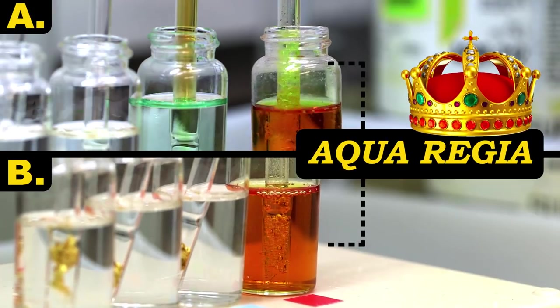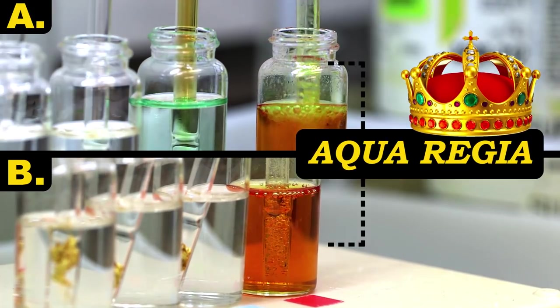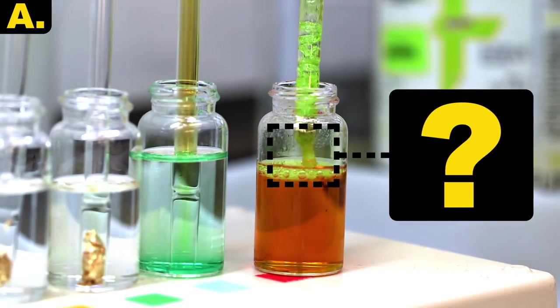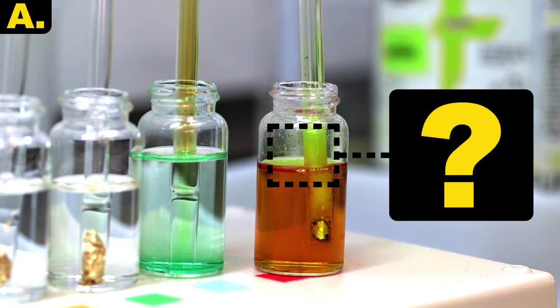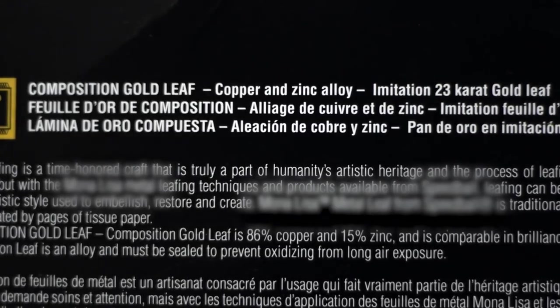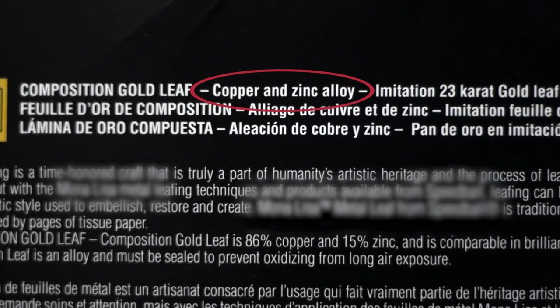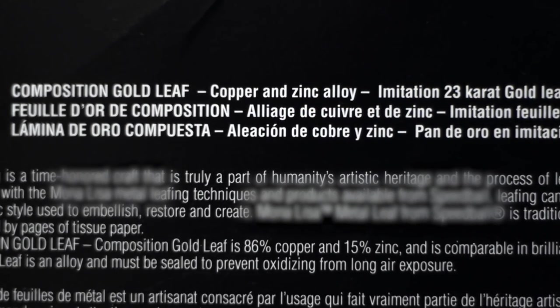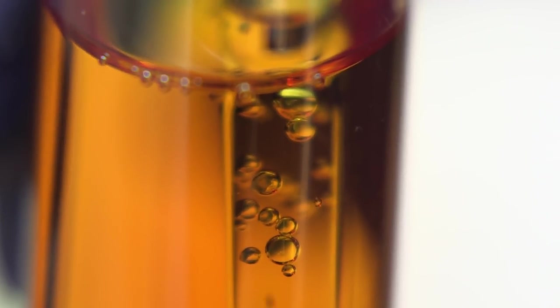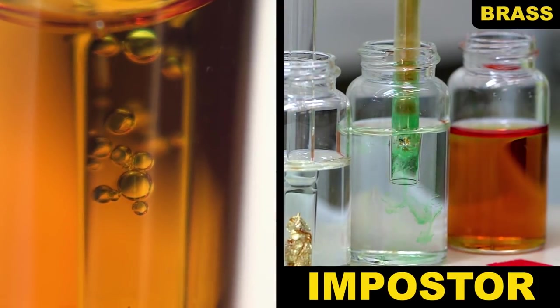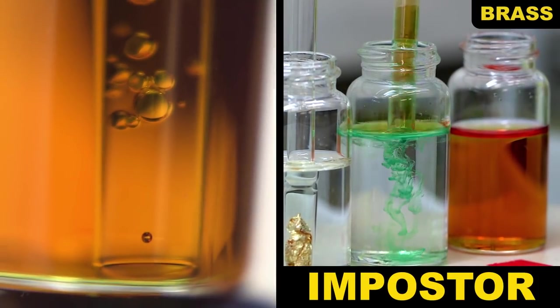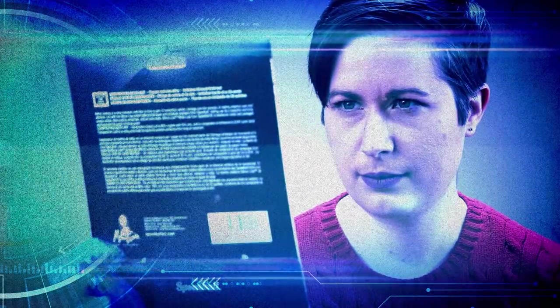Yep, aqua regia dissolves the noble metal of gold. Hence its royal name. So this begs the question, what the heck is metal A? It reacts the same as the copper. Looking at its label, we're told it too is a mix of copper and zinc, making it plain old boring brass. Not only did we dissolve gold, but we were able to spot an imposter all by throwing acids at them. Making us chemistry detectives. Coming next fall to CBS.